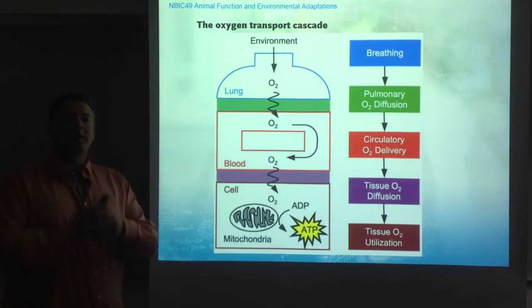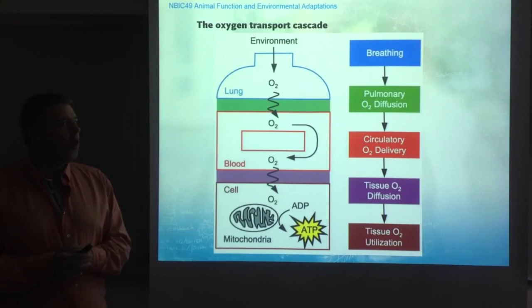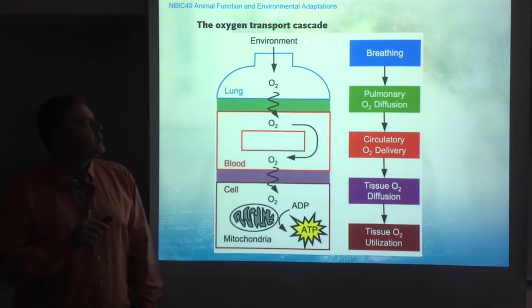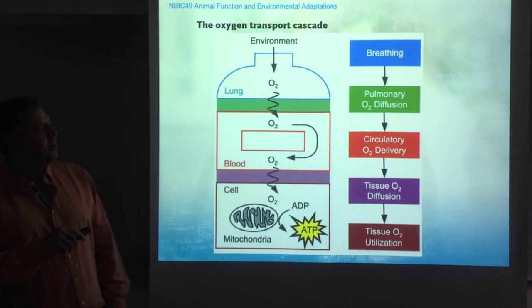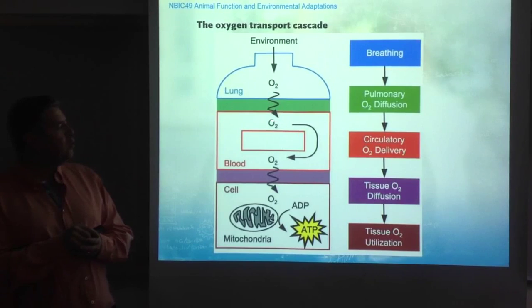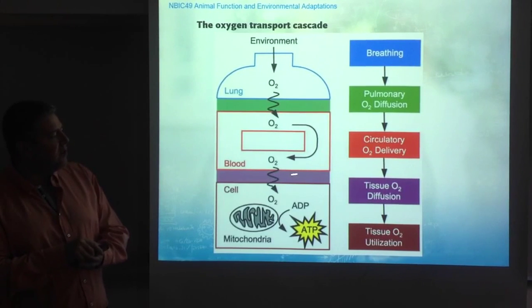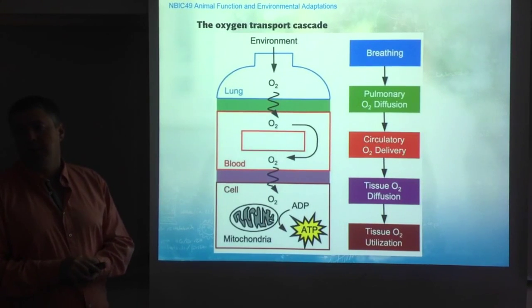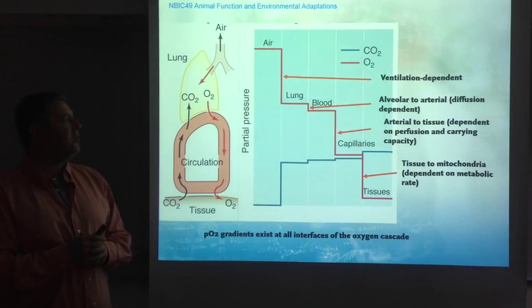The point of understanding high altitude physiology is understanding the deviation from the classical, standard oxygen transport cascade. This cascade starts with oxygen in the environment, taken into the lungs by breathing — ventilation. In the lungs it diffuses through the wall of the alveoli into the blood, then is transported by the circulatory system, diffusing again in the tissues where it must make it into the mitochondria to be utilized for the production of ATP. What's important is understanding the normal oxygen transport cascade and how it deviates at altitude.